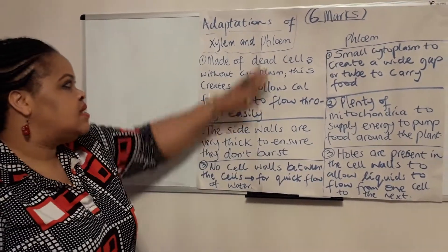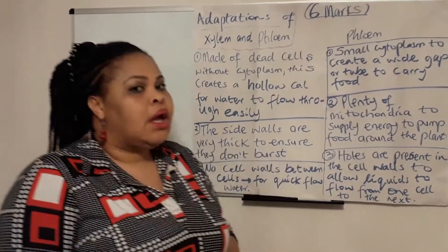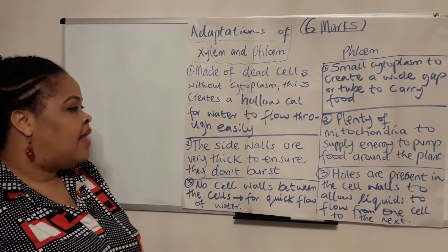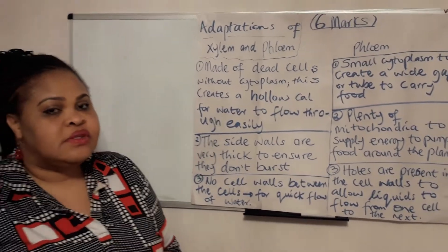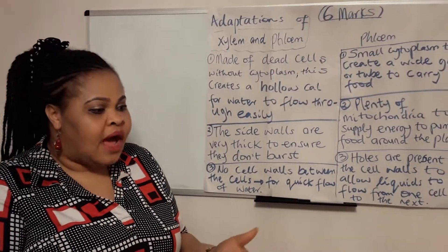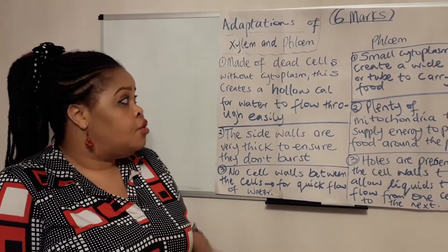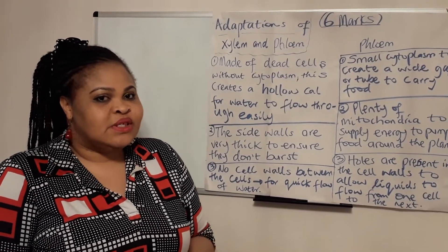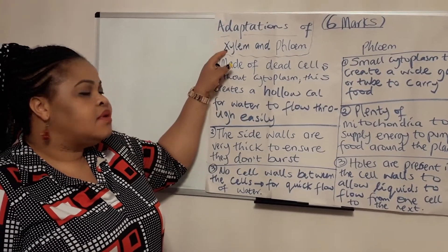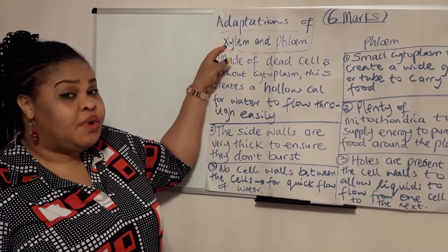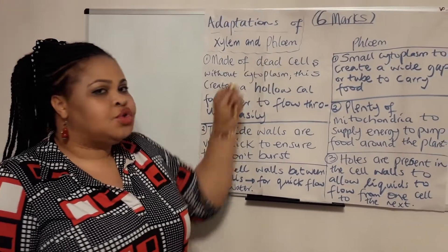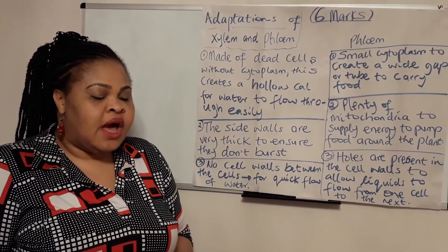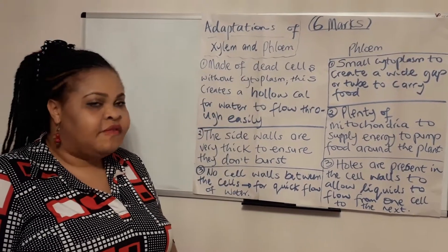So I'm going to quickly do this one. It could be asked as a key question in biology — it's the adaptations of xylem and phloem vessels. Just like you have blood vessels in animals, like the veins and arteries, you also have vessels in plants which carry substances. Specifically, the xylem transports water and the phloem transports food — sucrose — after it's produced in the leaves at the end of photosynthesis.